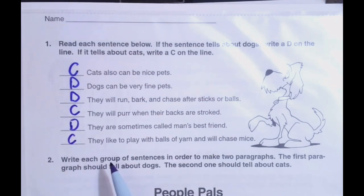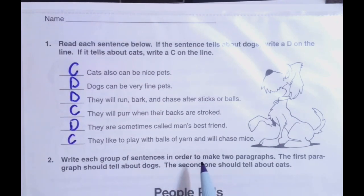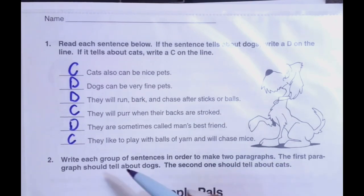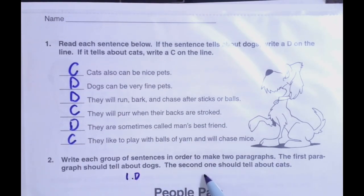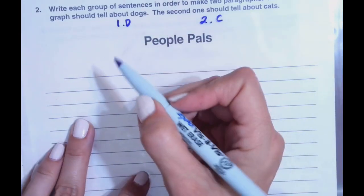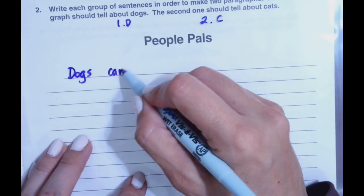Number two: write each group of sentences in order to make two paragraphs. The first paragraph should tell about dogs. The second one should tell about cats. So the first paragraph will start with dogs.